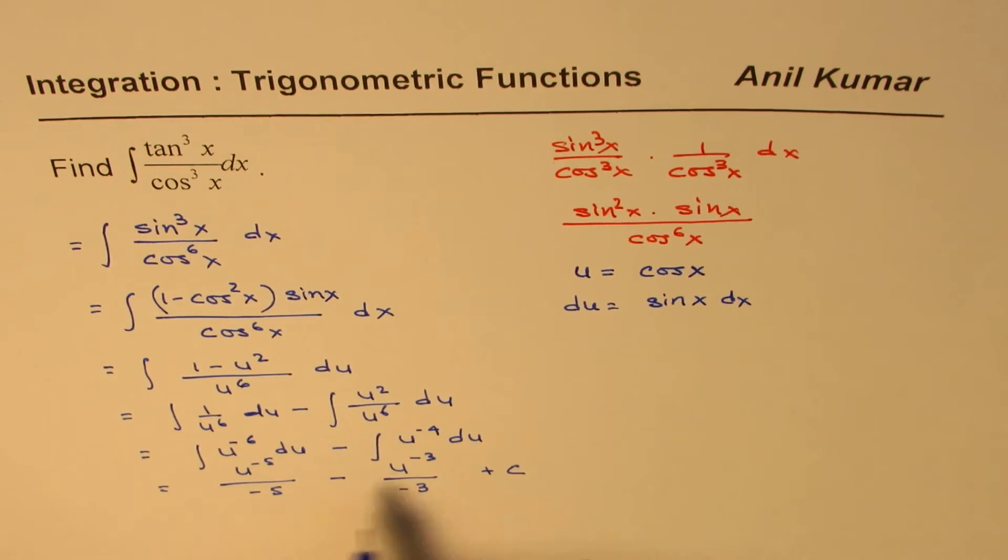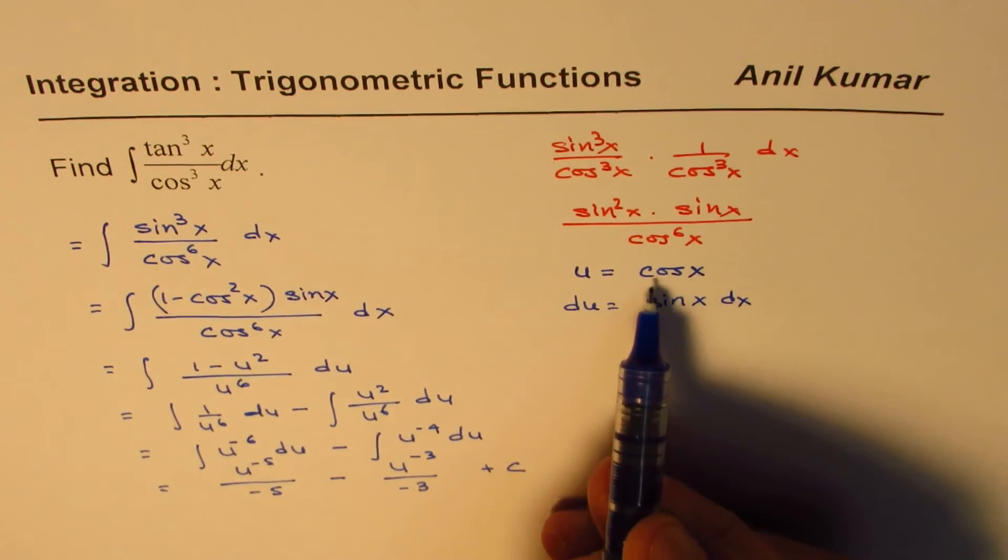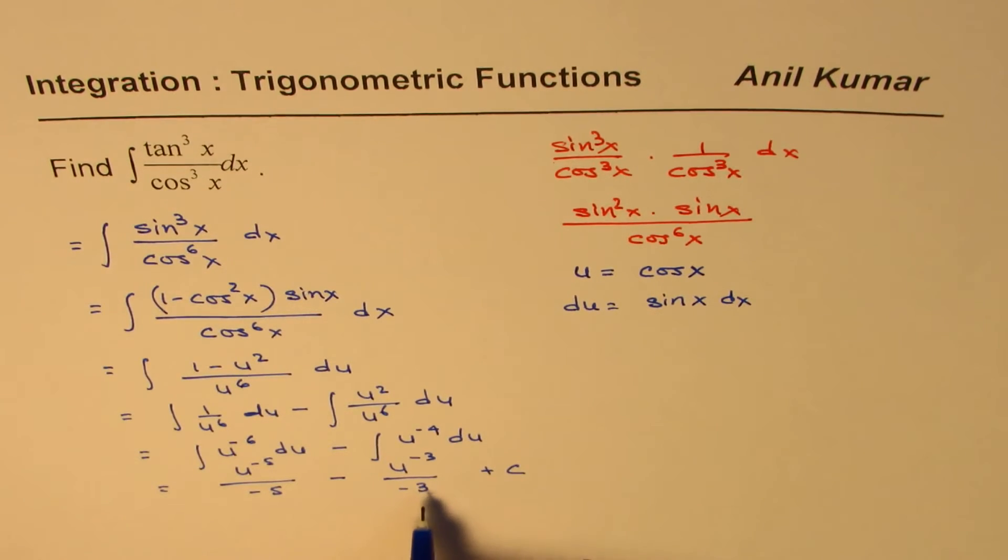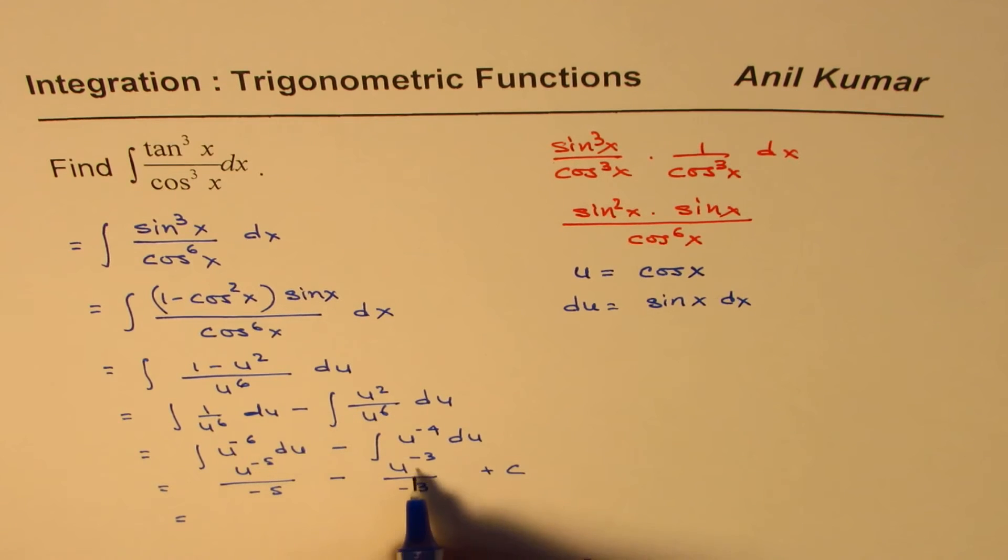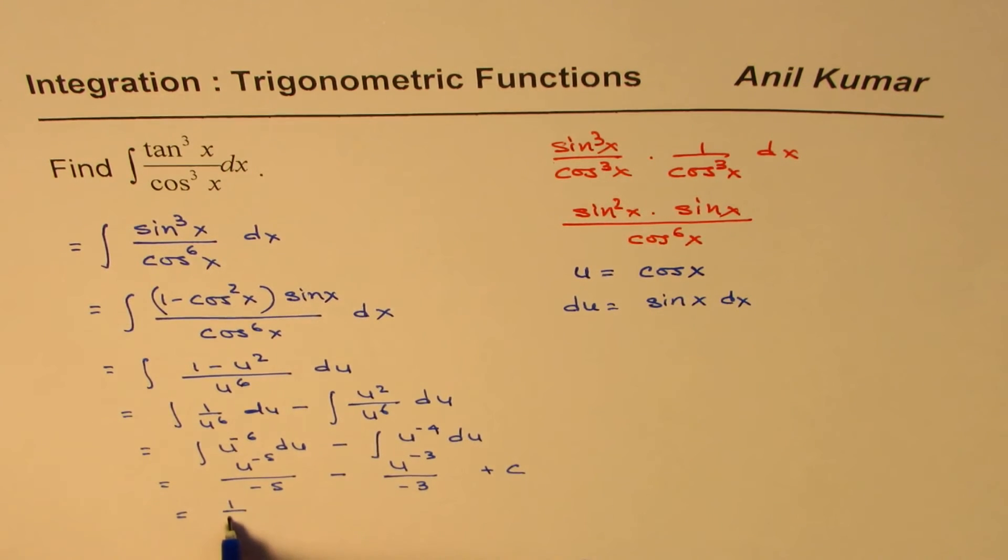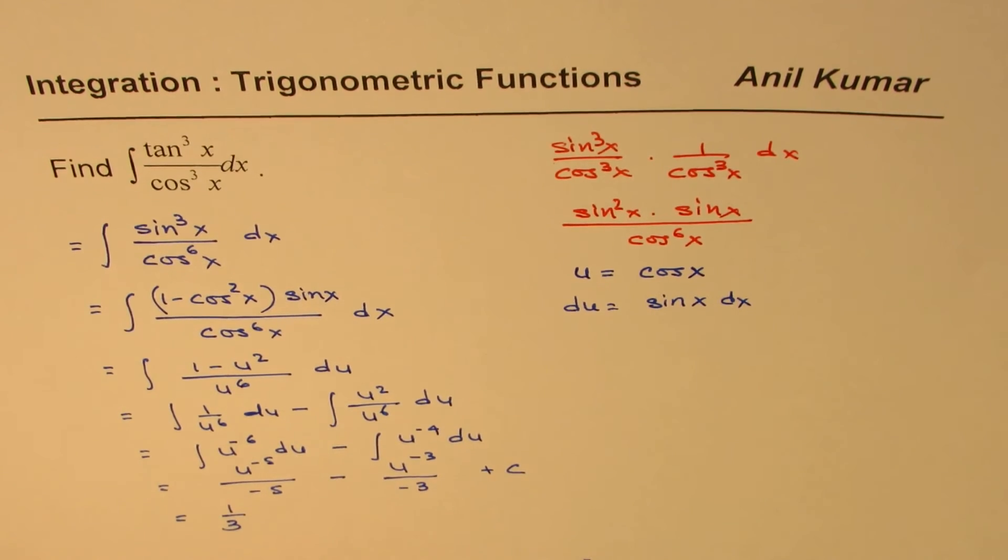Since u is cos x, we can rearrange and write this. Let me write this on the first side. This will be 1 over 3, because minus minus becomes plus, and u is cos x, so we can write this as 1 over cos cube x.